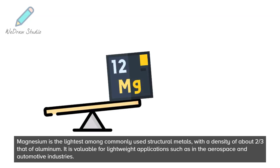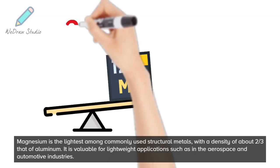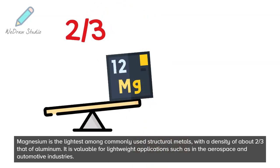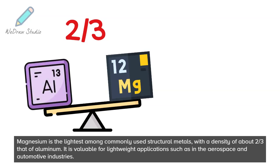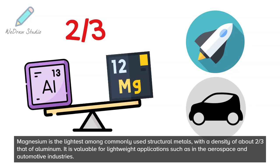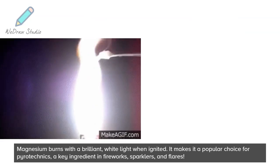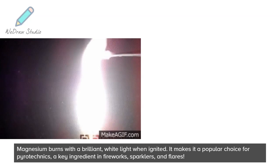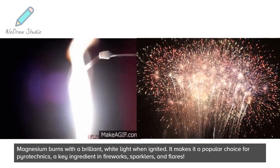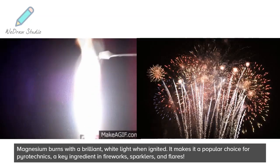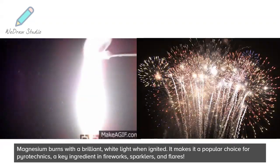Magnesium is the lightest among commonly used structural metals, with a density of about two-thirds that of aluminum. It is valuable for lightweight applications such as in the aerospace and automotive industries. Magnesium burns with a brilliant white light when ignited, making it a popular choice for pyrotechnics — a key ingredient in fireworks, sparklers, and flares.